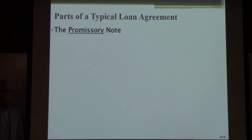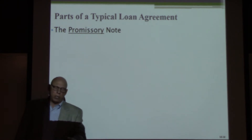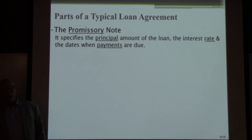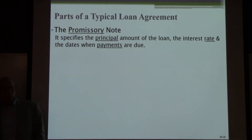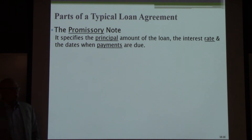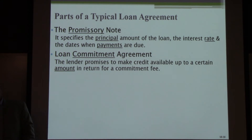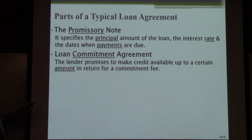What are some key components of a loan agreement? First, the promissory note. This specifies how much principal is involved, what the interest rate is, what the payments will be and when they are due. The promissory note also tells us when the loan is due to be rolled over or renewed. Then there's the loan commitment agreement — when there is a line of credit, the bank will articulate the amount of money available and what the commitment fee will be.